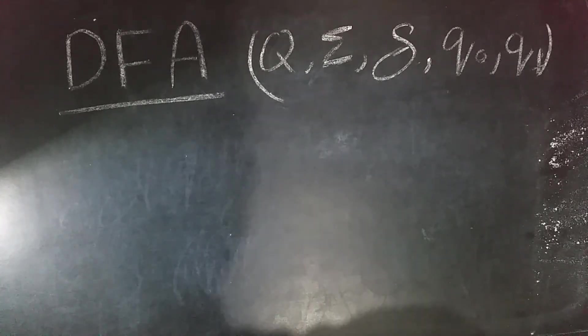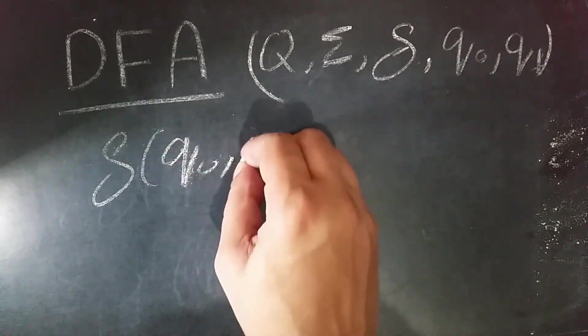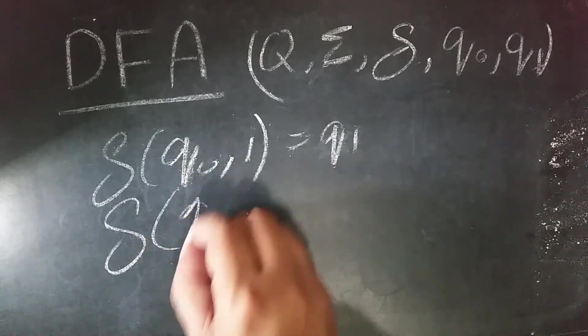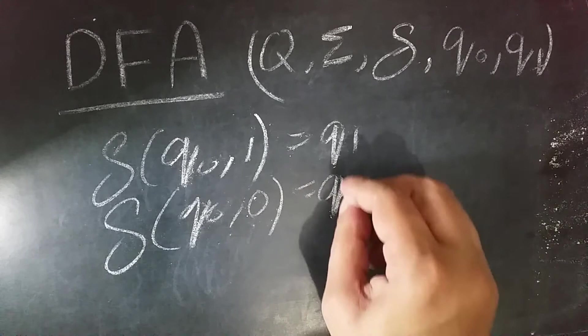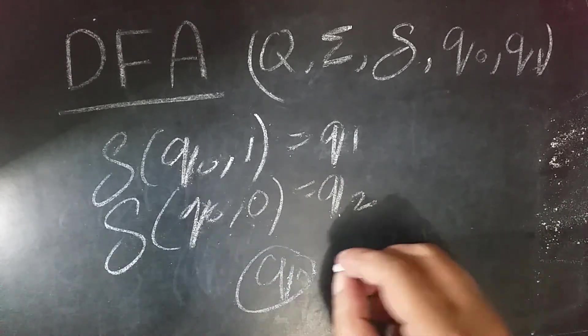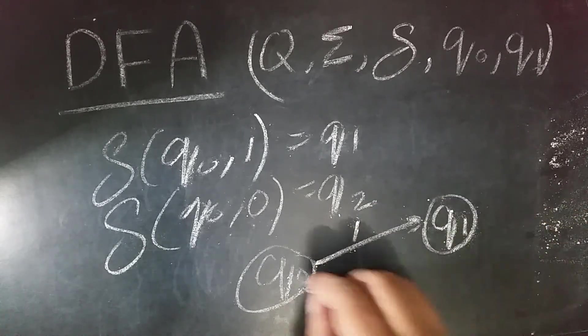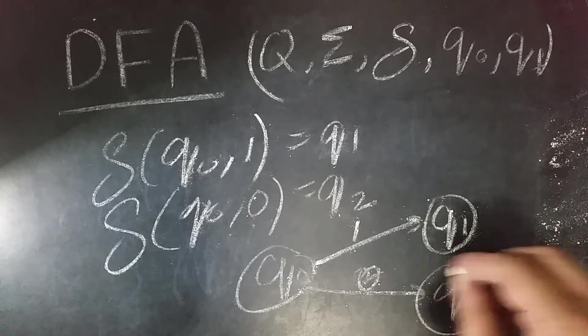For a final example, let's say for Q0, if the input symbol is 1, then take to Q1. And for the same state, if the input symbol is 0, then take to Q2. So on Q0, if it is 1, then take to Q1. If it is 0, then take to Q2.